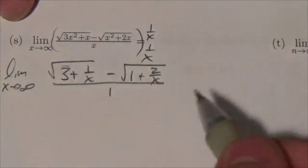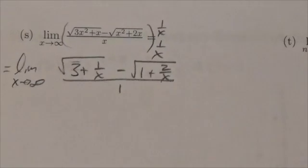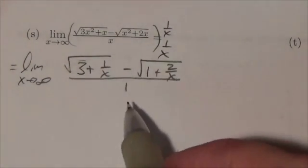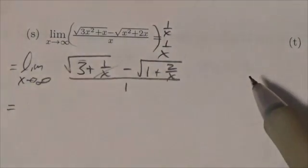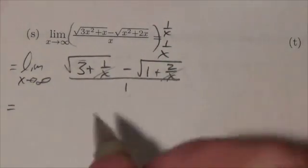And our denominator is just going to become 1. So now all of a sudden, because we've done this, the denominator is no longer an issue. Now if I let x go to infinity, this term goes to 0, this term goes to 0,